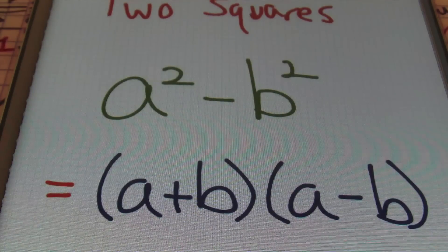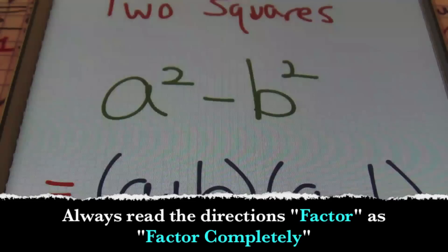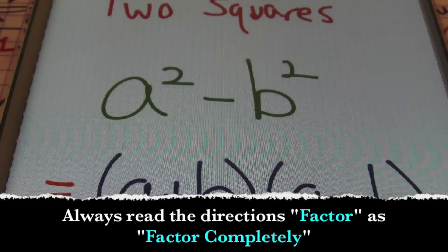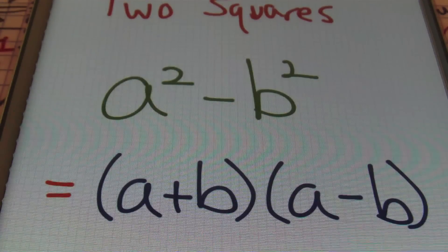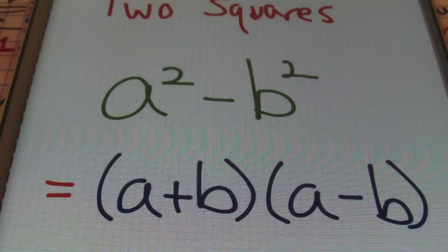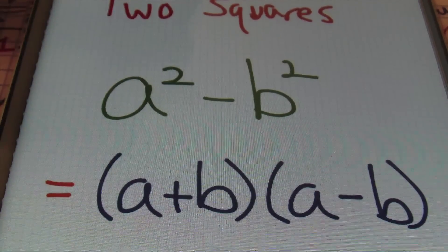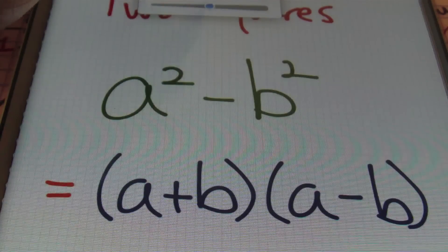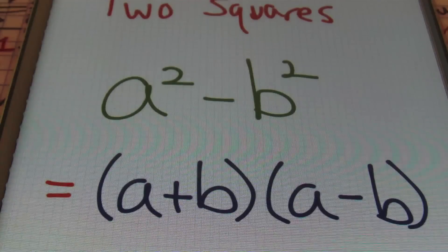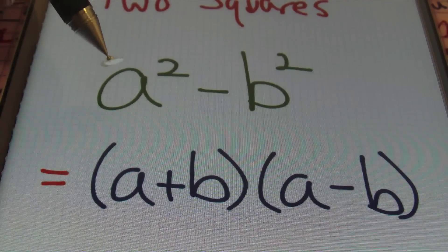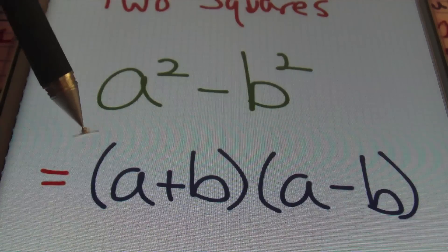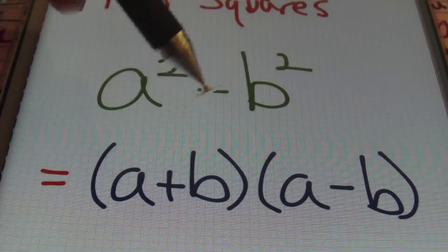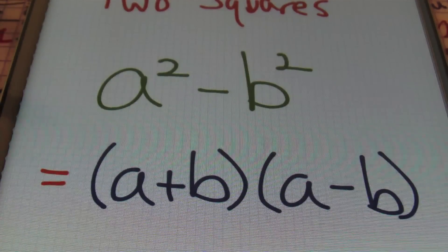The second thing is you're going to always interpret the instruction to factor as meaning factor completely, because a lot of times when you're asked to factor, factoring is not just going to be one step. It could also mean that you could factor again and again depending on the problem. So be aware that when asked to factor, you may have to factor multiple times. In addition to that, when you see an expression in the form of a squared minus b squared, the factoring pattern is going to always be a plus b times a minus b.